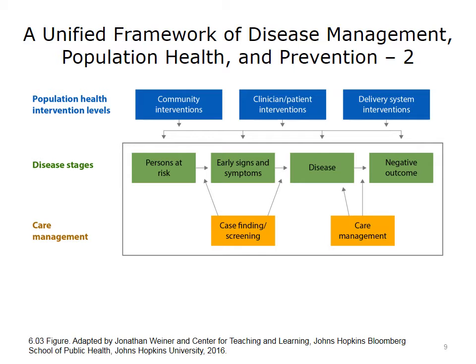Chronic care management spends a lot of time managing risk in an organized, structured basis. One needs risk measurement and case-finding tools to accomplish this. Looking at the blue boxes at the top — community interventions, clinician-patient interventions, and delivery system interventions — if one has a population of interest that may be at risk for diabetes or hypertension, exercise and good diet at the community level are important. A clinician can provide preventive care and good supportive value-based care with medication and guidelines, though that's really more viewed as clinical quality improvement rather than population health.